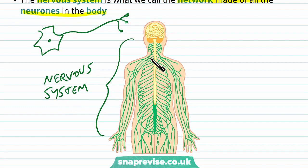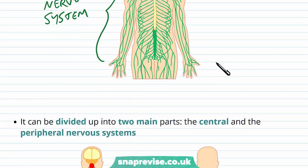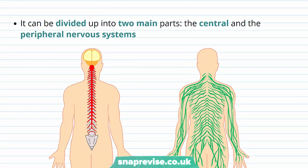You can see that nerves go around all different parts of the body, and they have a central part to them as well. We can divide the nervous system into two main parts: the central nervous system and the peripheral nervous system.